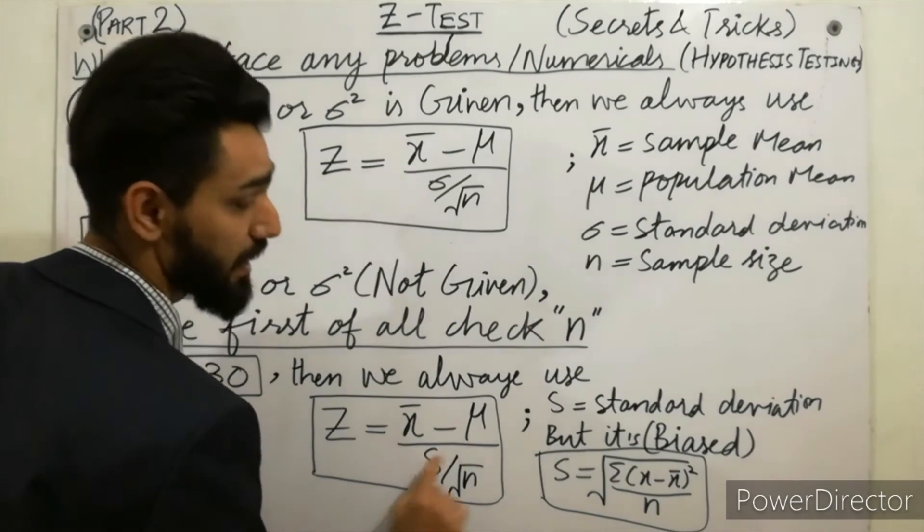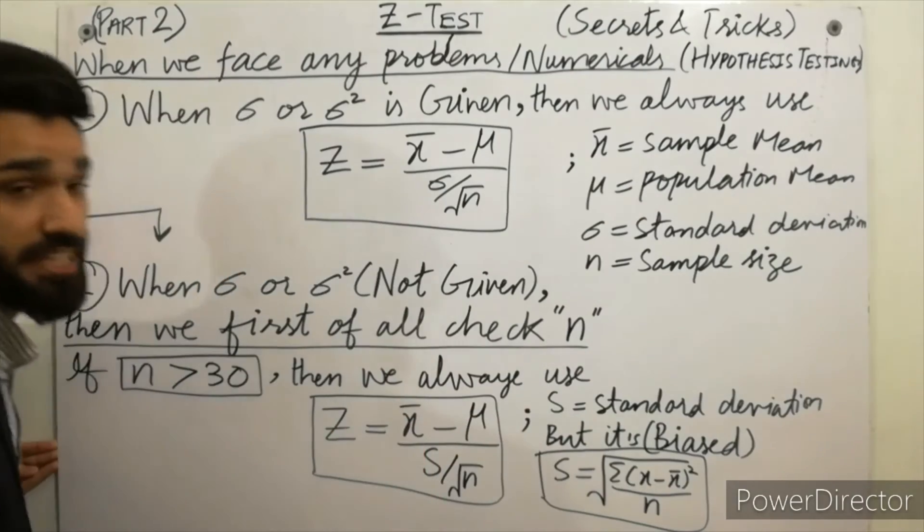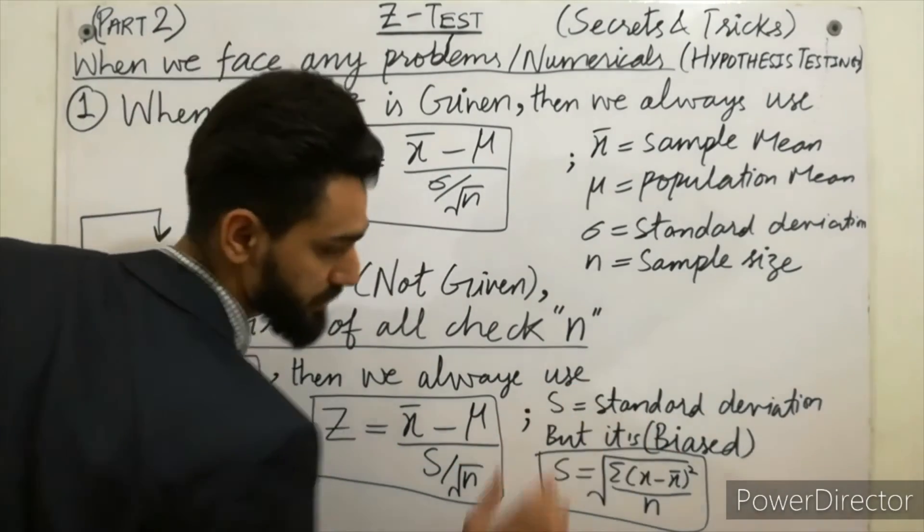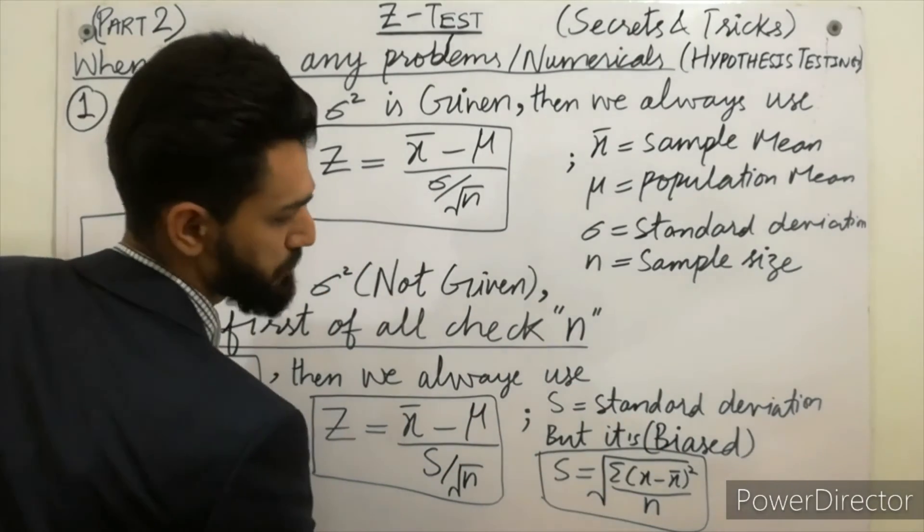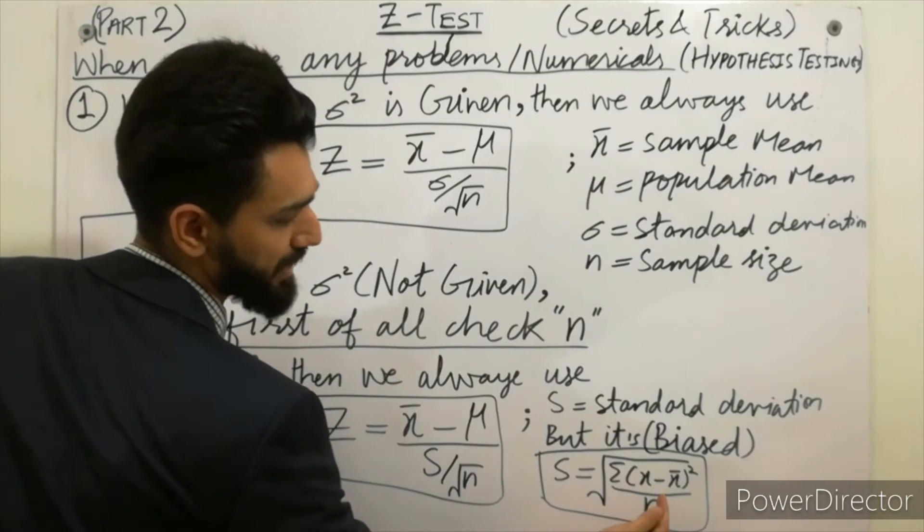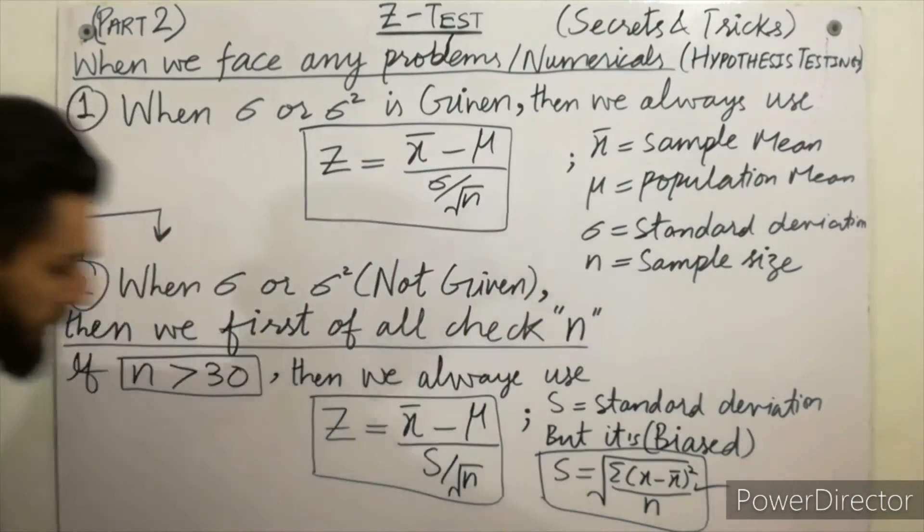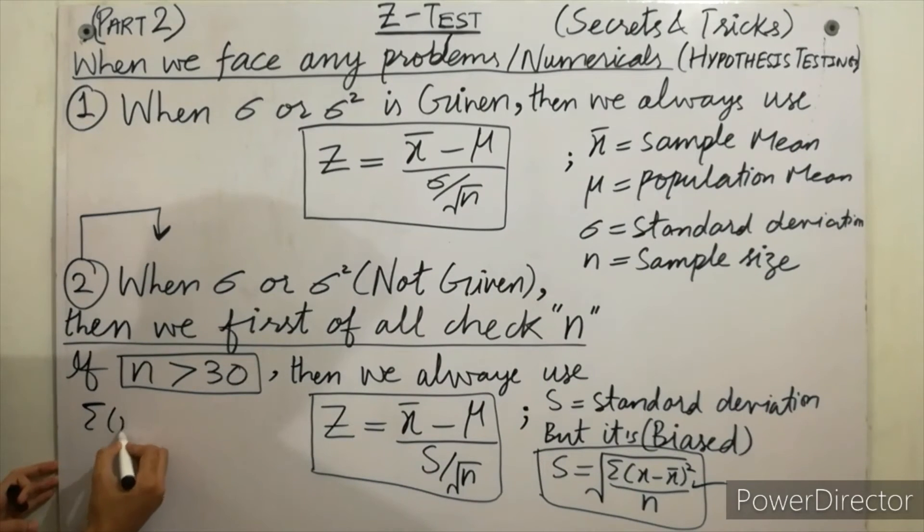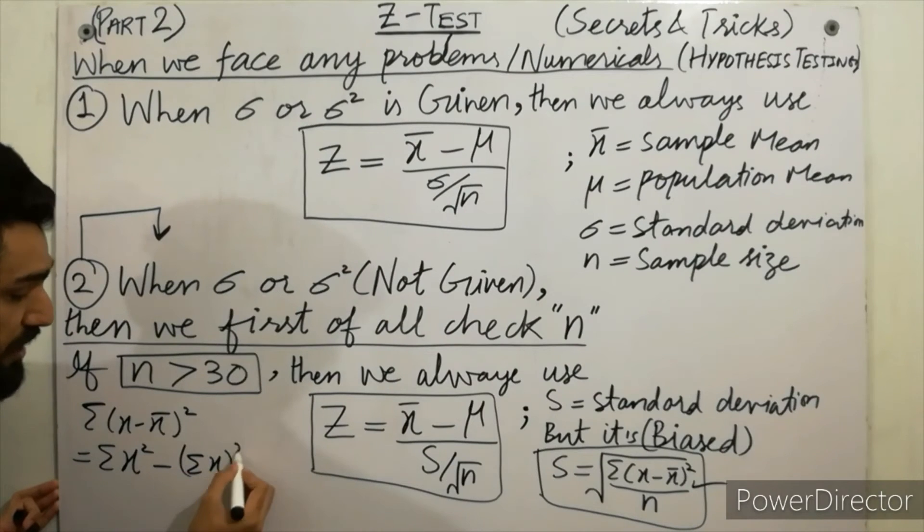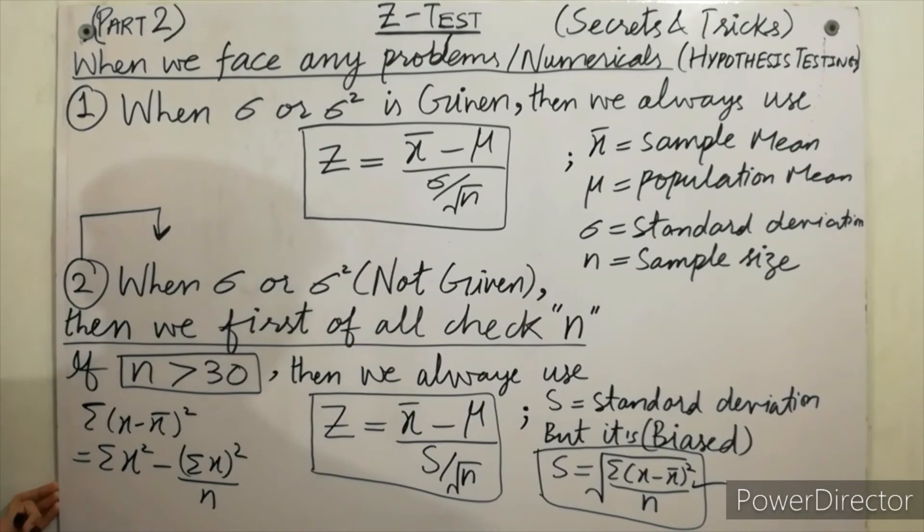Must remember, s is the standard deviation, but s is biased. S uses the formula: square root of Σ(x - x̄)²/n. It is also equal to √[Σx² - (Σx)²/n]/n.